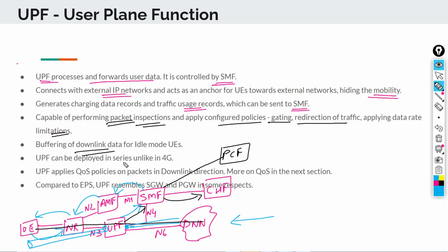The UPF can be deployed in series, unlike in 4G. You can have multiple UPFs within a given 5G network, each with different functions. We will look at some of the use cases for that in later slides. The UPF also applies all QoS policies on packets in the downlink direction — more on that in the QoS section.